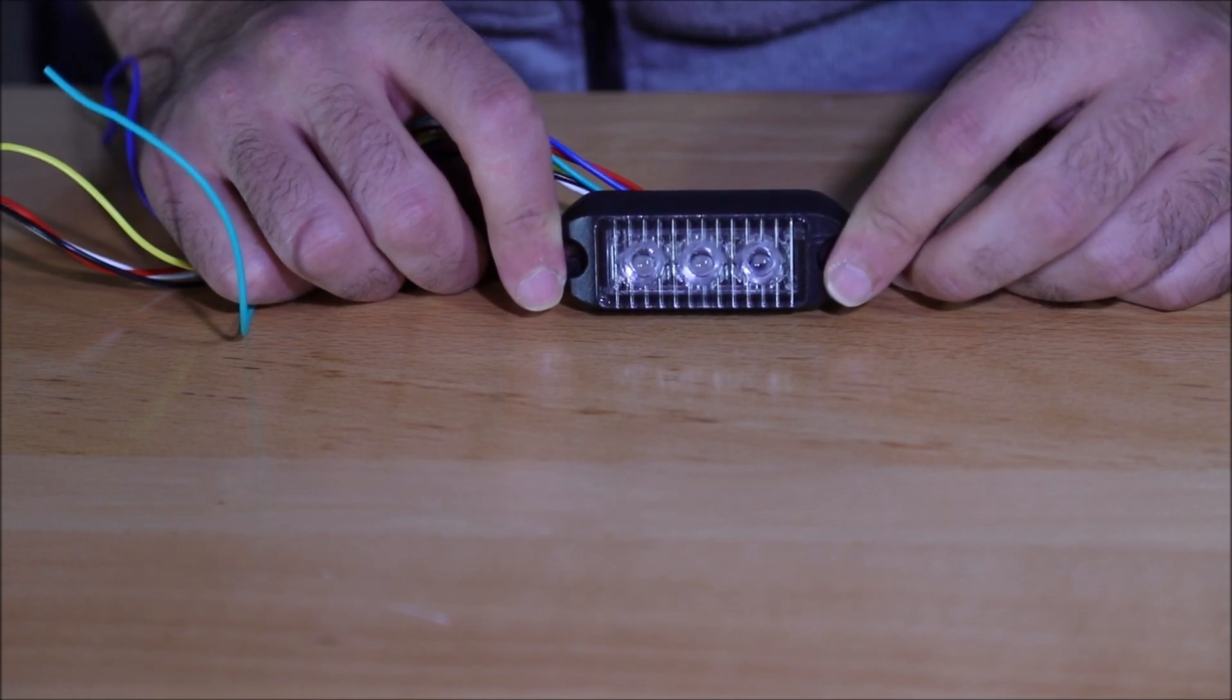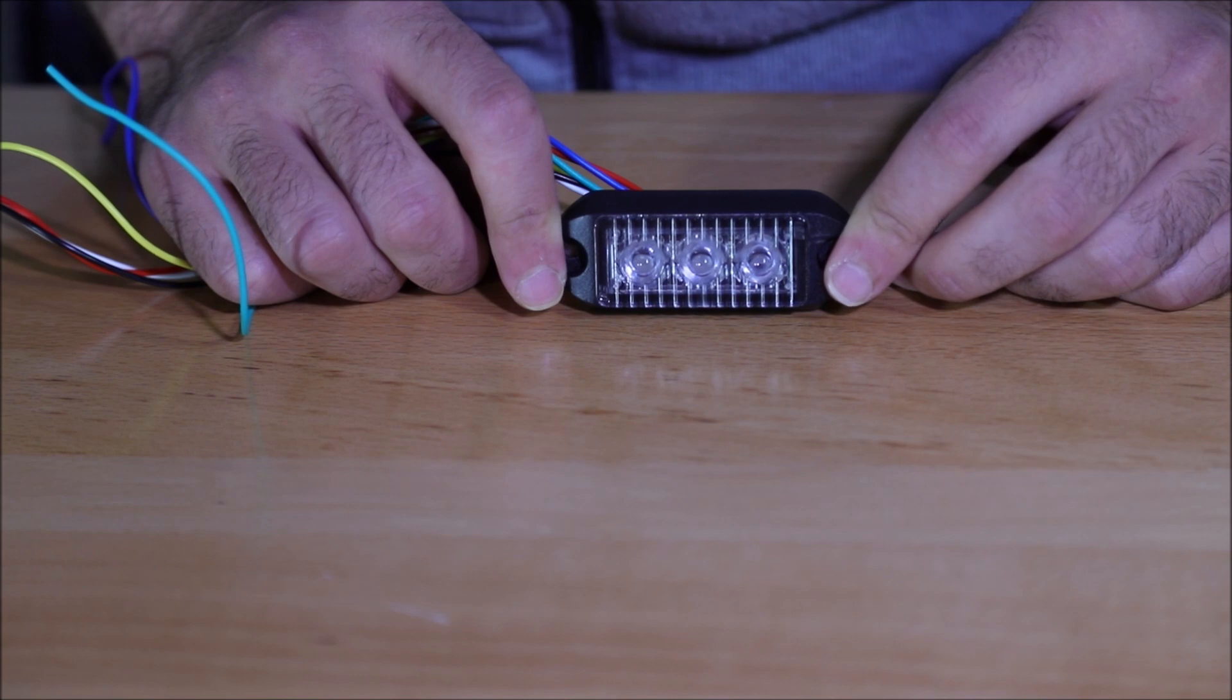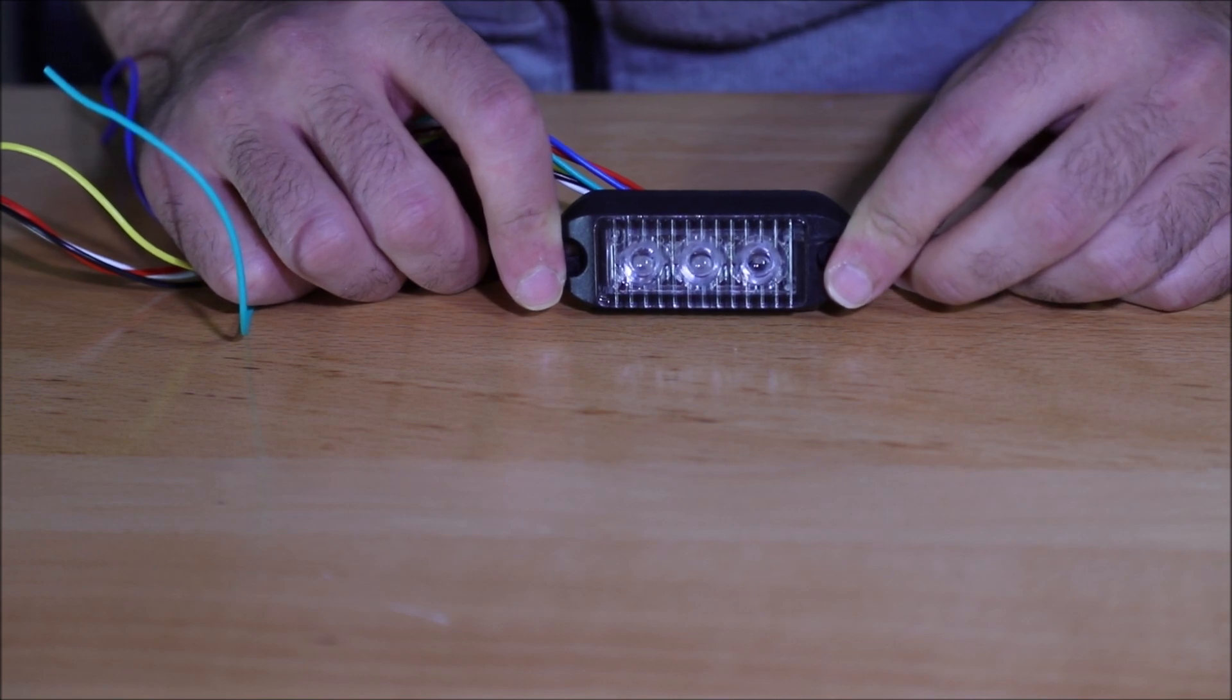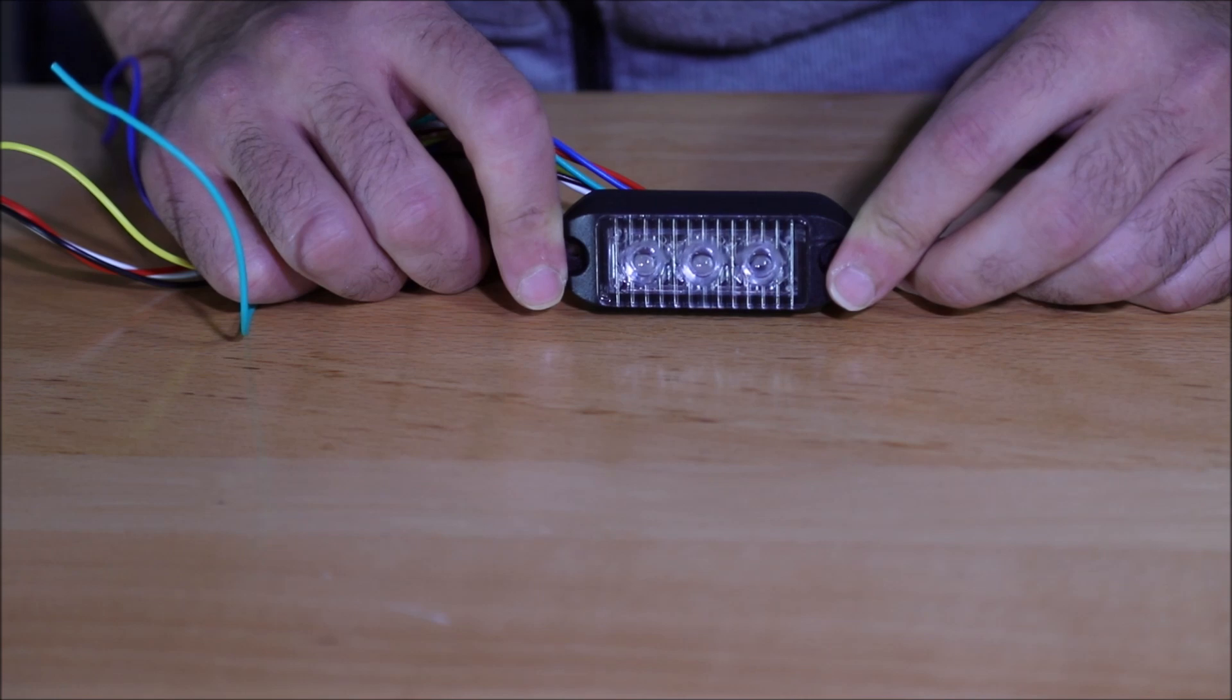It has 6 wires: power, ground, sync high-low, pattern, and our newest feature, scene or cruise mode, which makes it go steady.